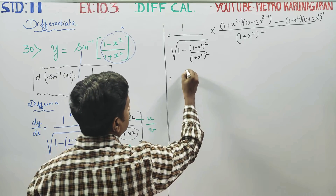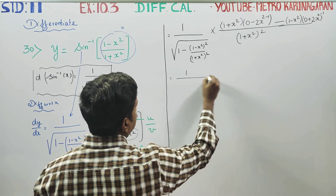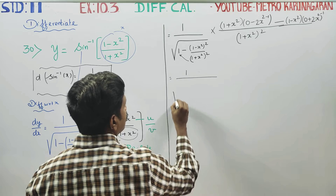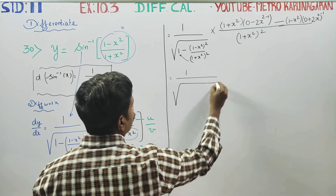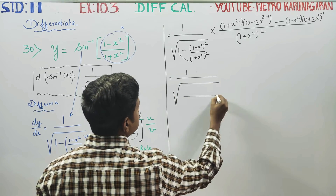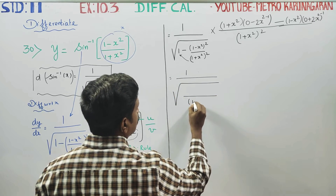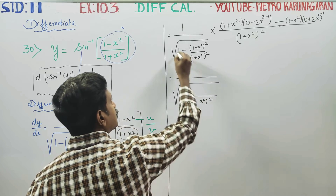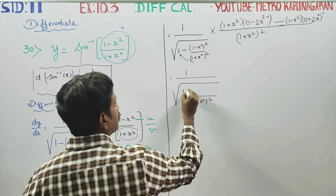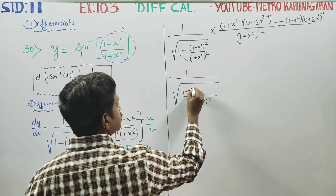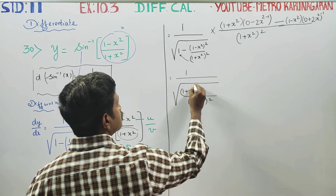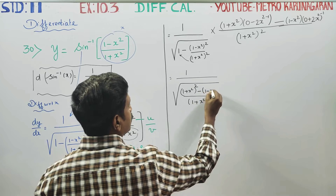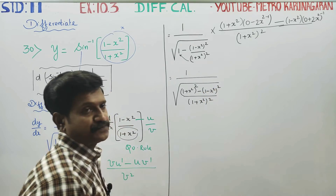Now by cross multiply, the LCM gives us: numerator becomes (1 plus x square) whole square minus (1 minus x square) whole square.